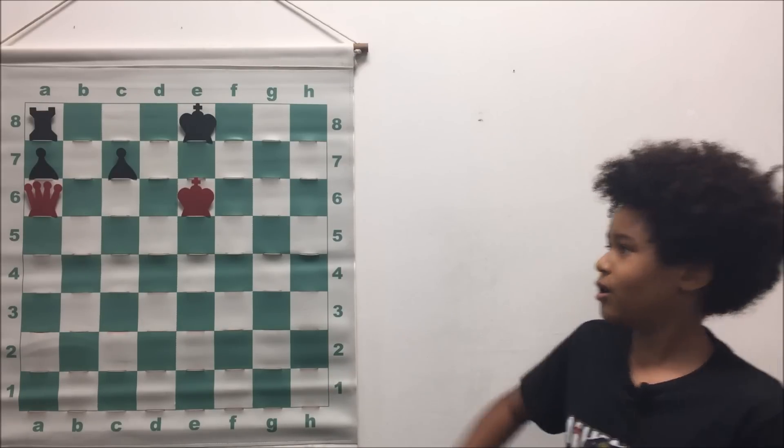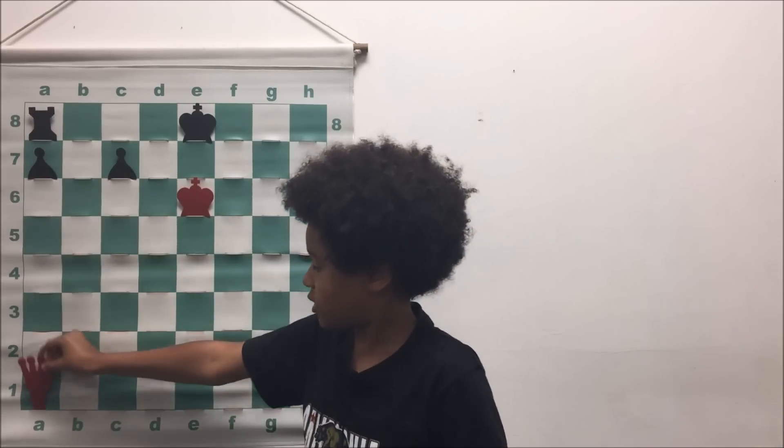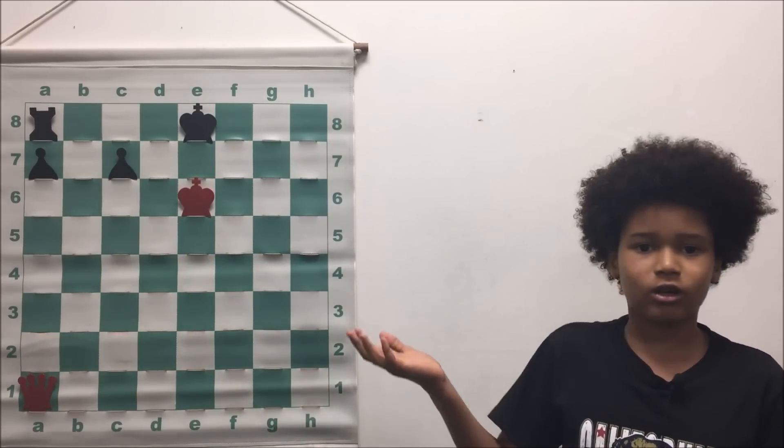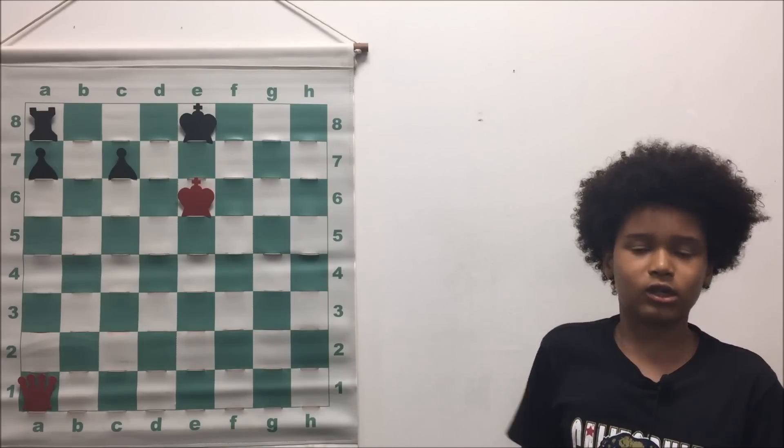Thus you see why Queen to a1 checkmates, because there are no other moves that black could have made on the first move.